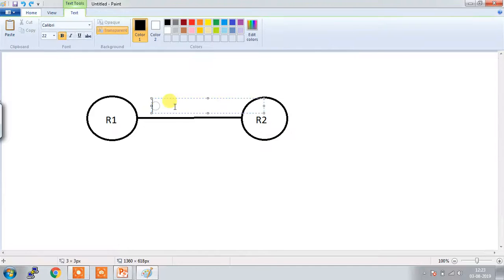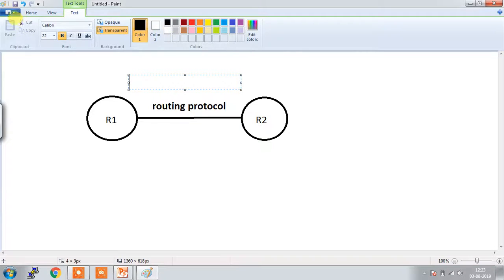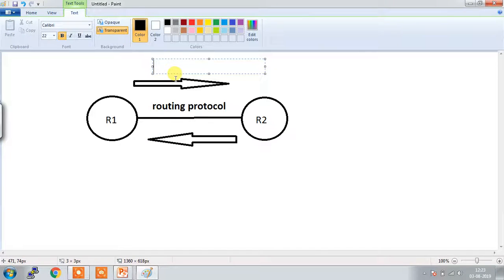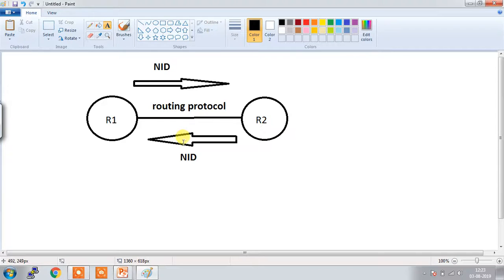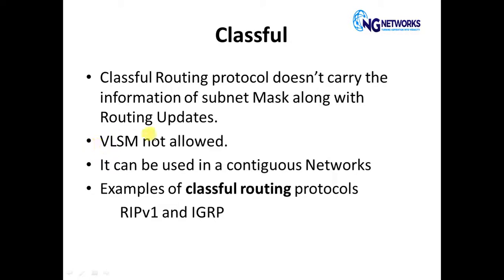Suppose a classful routing protocol is enabled. Whenever the routers share updates with each other, they will only share the network ID — they are not going to share the subnet mask information along with the routing updates.